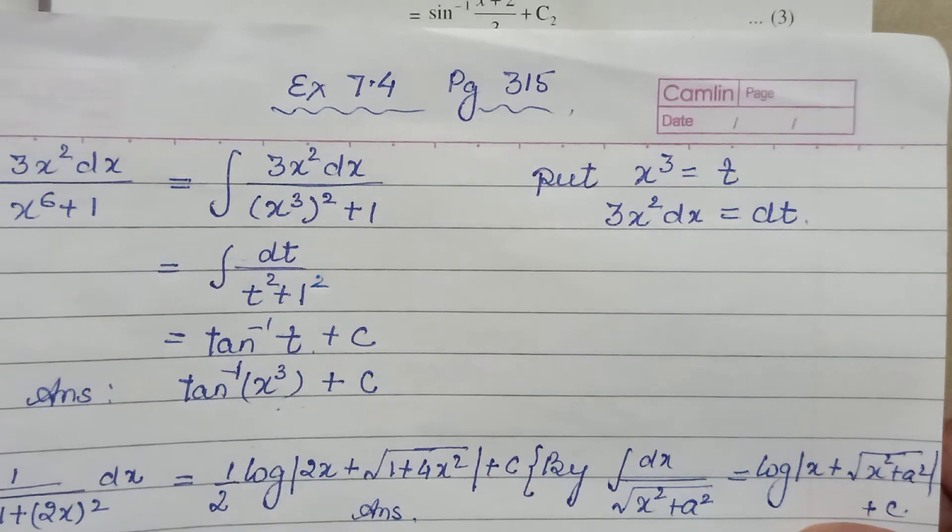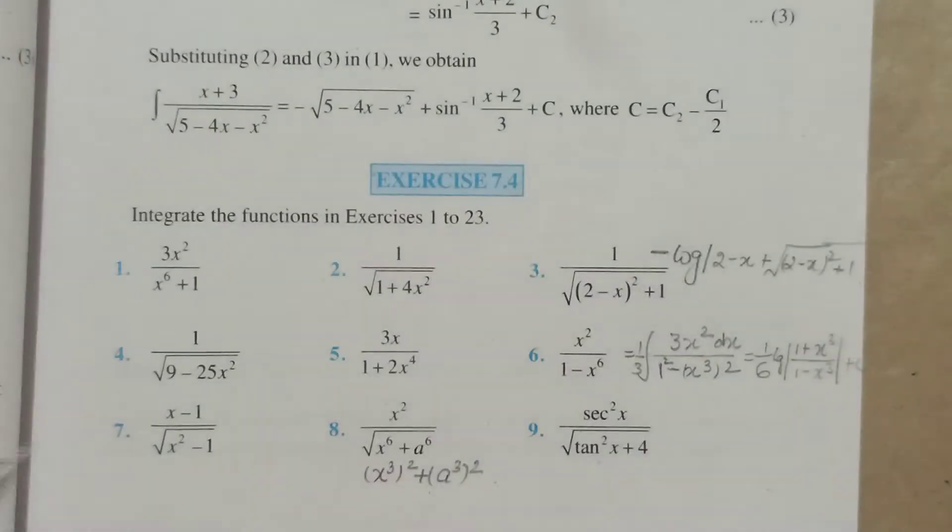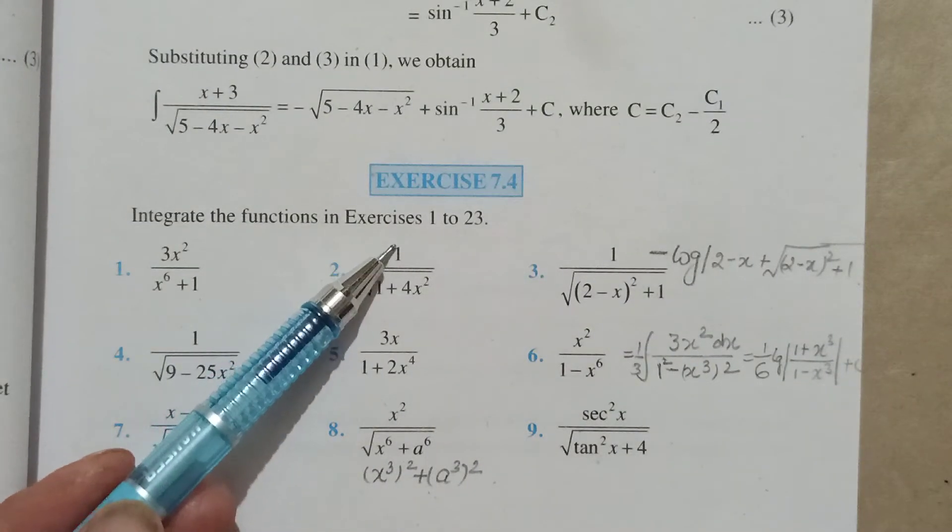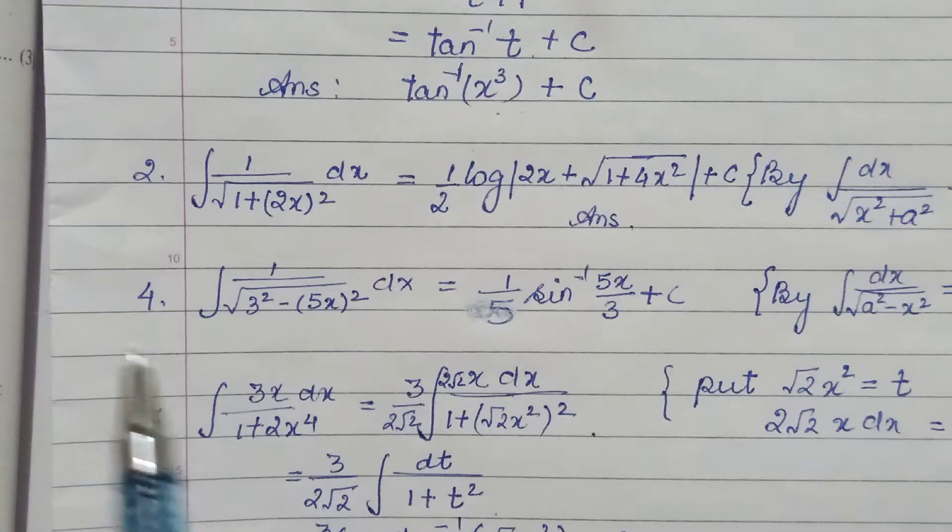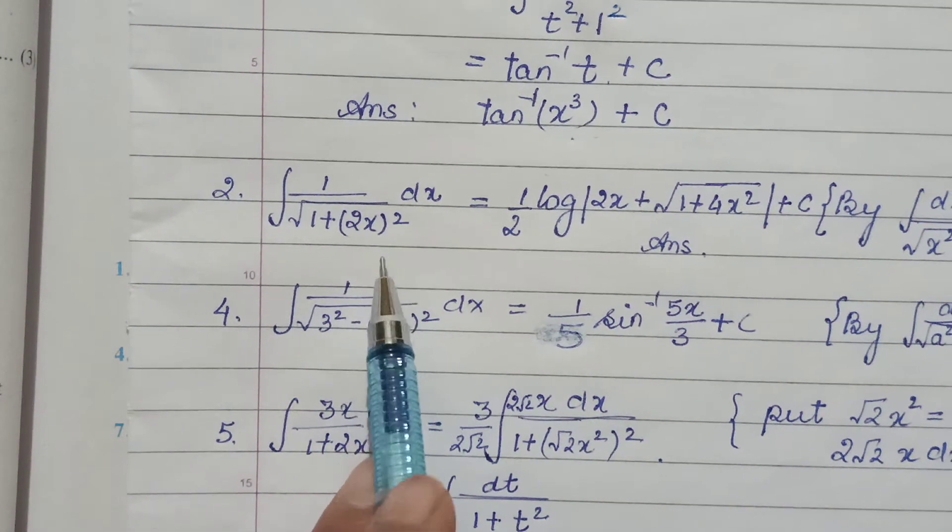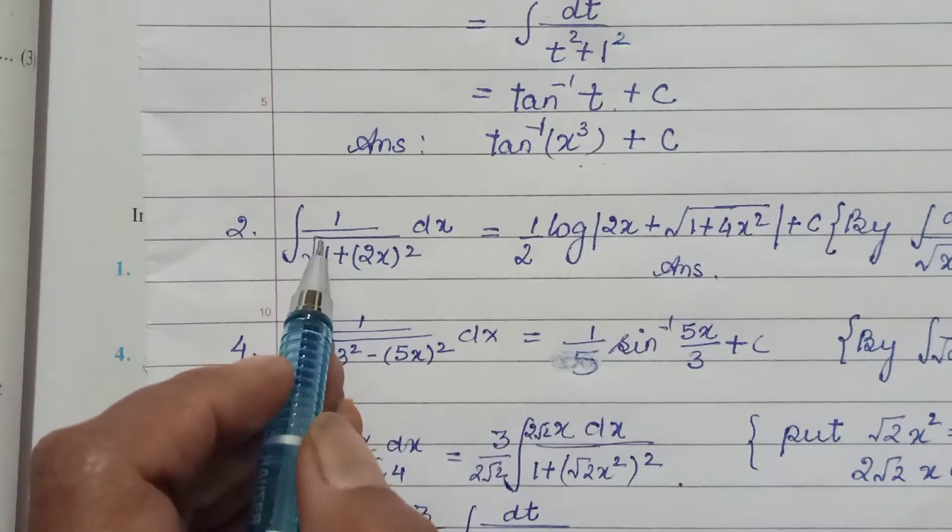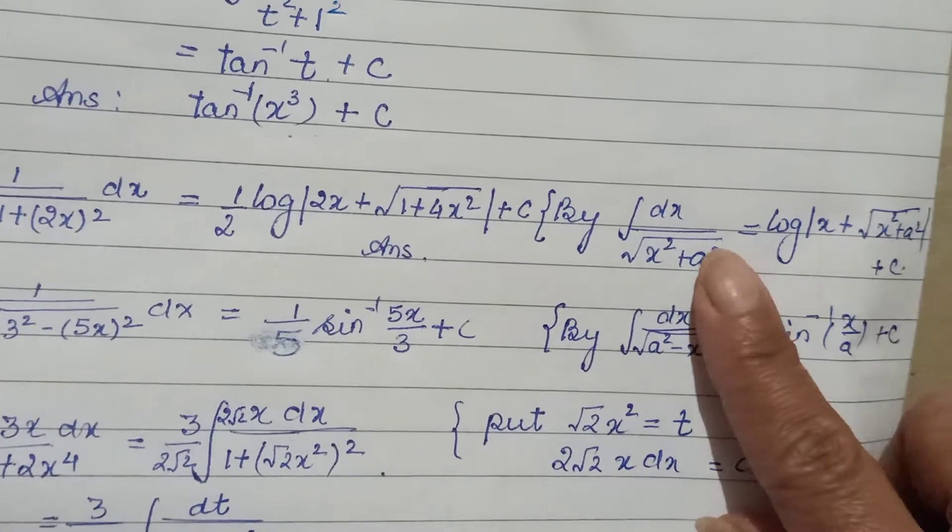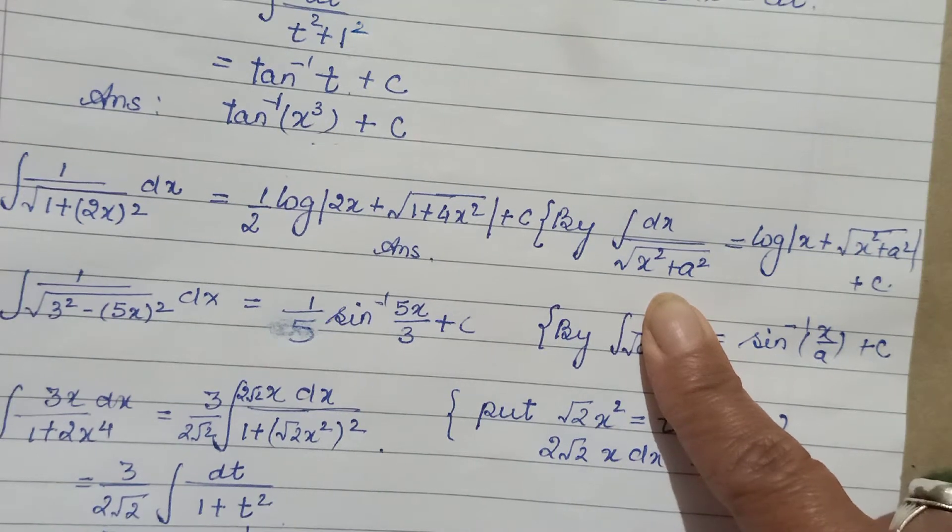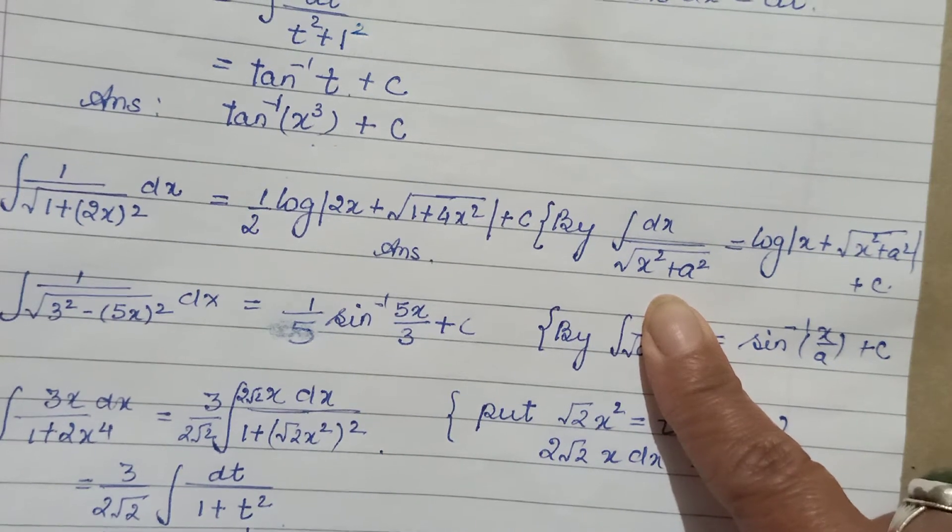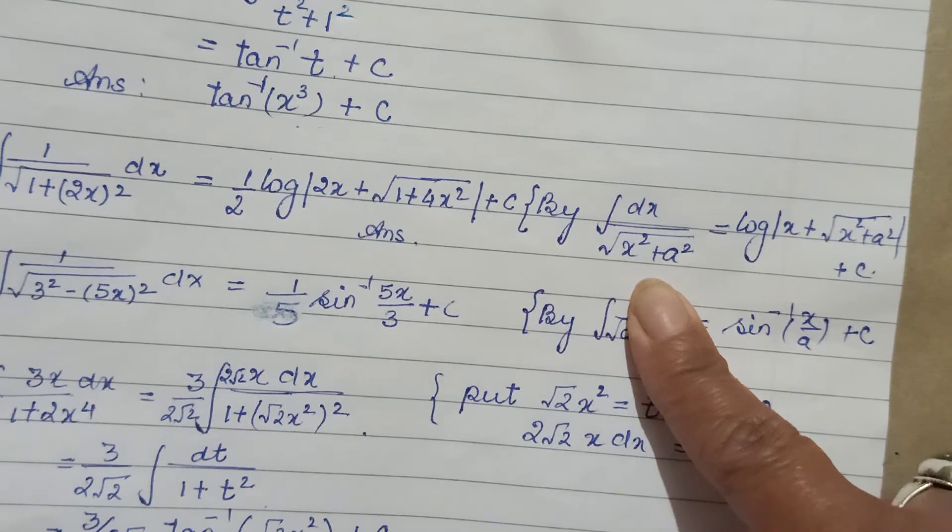In the next one, 1/√(1 + 4x²), this 4x² we can write as (2x)². Then this is of the form √(a² + x²).